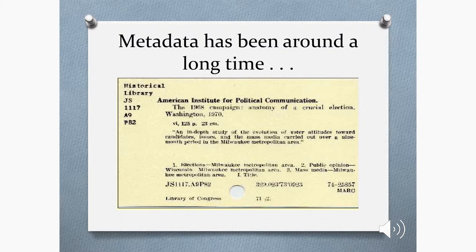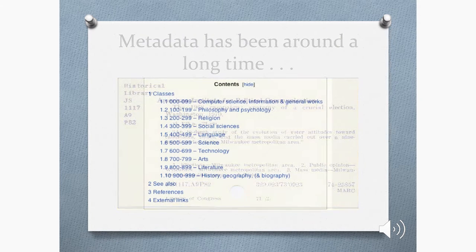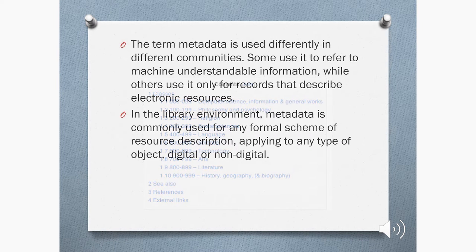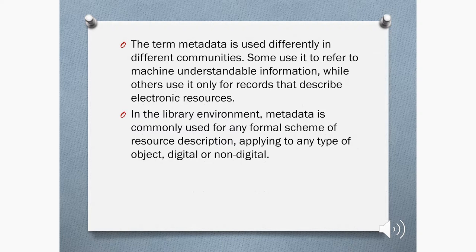It also gave information which allowed a user to go and retrieve the object from the shelf. Metadata also comes in formats like the Library of Congress classification system, which classified objects — originally analog but now electronic — under broad thematic categories. Metadata as a term is used differently in different communities. Sometimes communities refer to it as machine-readable text, and other communities use it for records that describe resources, electronic or otherwise. In the library world, metadata is used for any kind of formal scheme or resource description, applied to any type of object, digital and non-digital.